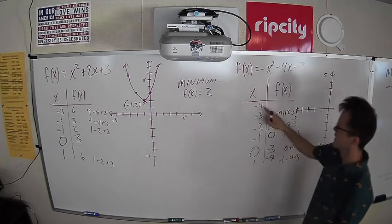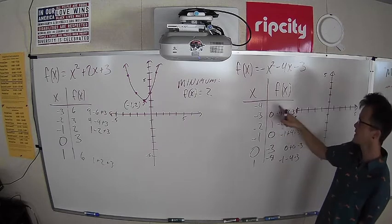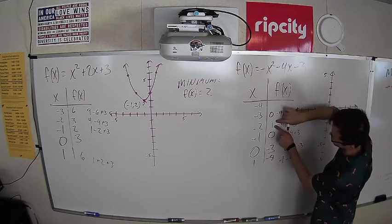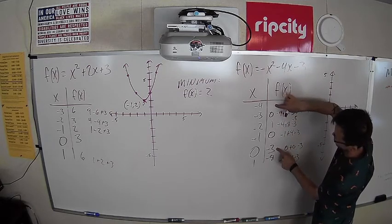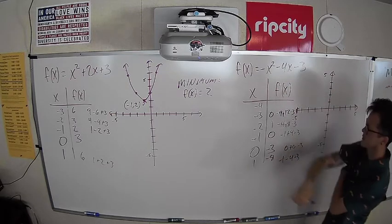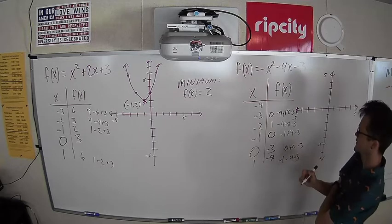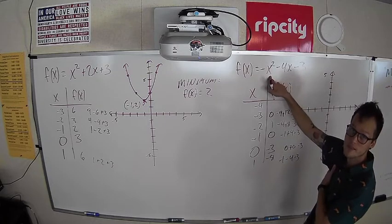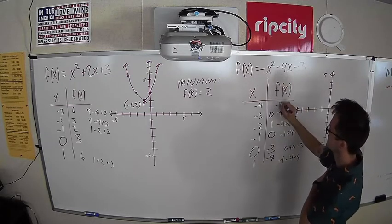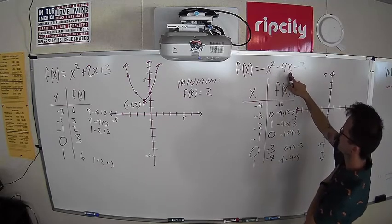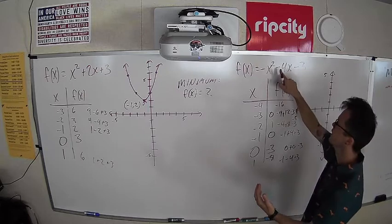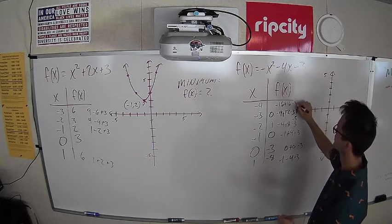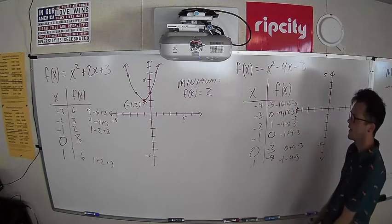The only way to confirm it is if when we plug in negative 4 for x, the y value is negative 3 — because then it's symmetric. We have our turnaround point at (-2, 1), then two zeros, then the negative 3s. Let's do negative 4: negative 4 times negative 4 is positive 16, but the negative sign forces it to negative 16. Minus 4 times negative 4 is negative 16, but it's minus a negative, so we're adding 16. That's 0 minus 3. We got the negative 3 we hoped for!